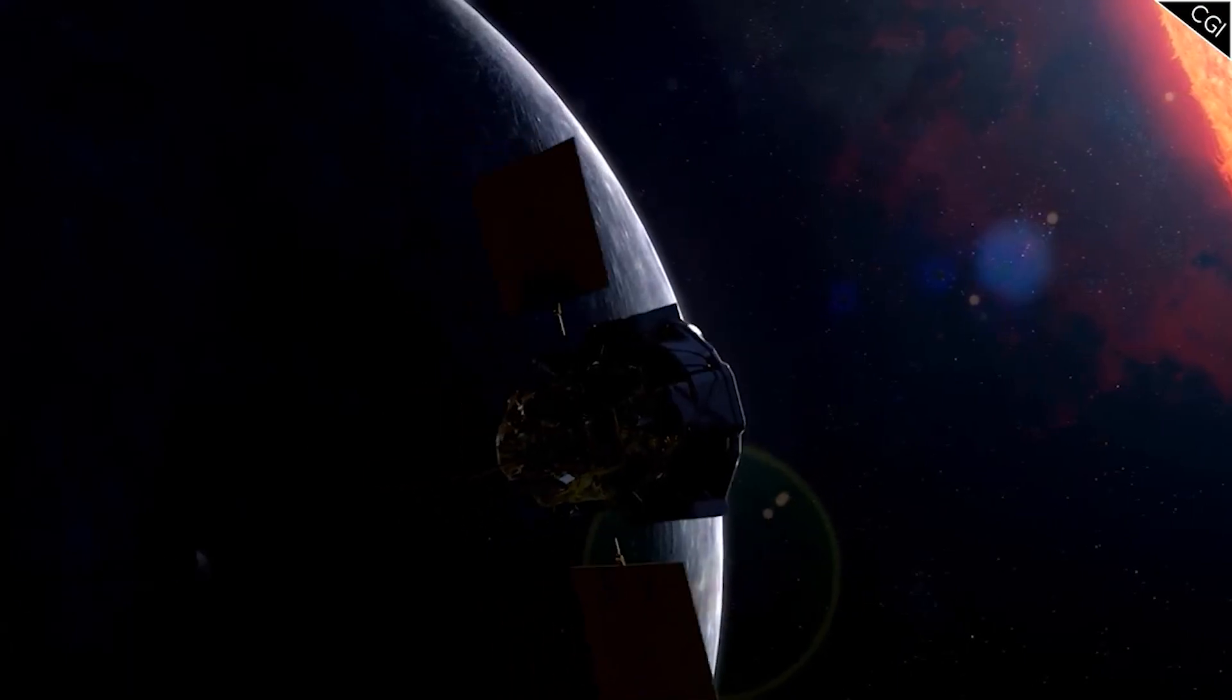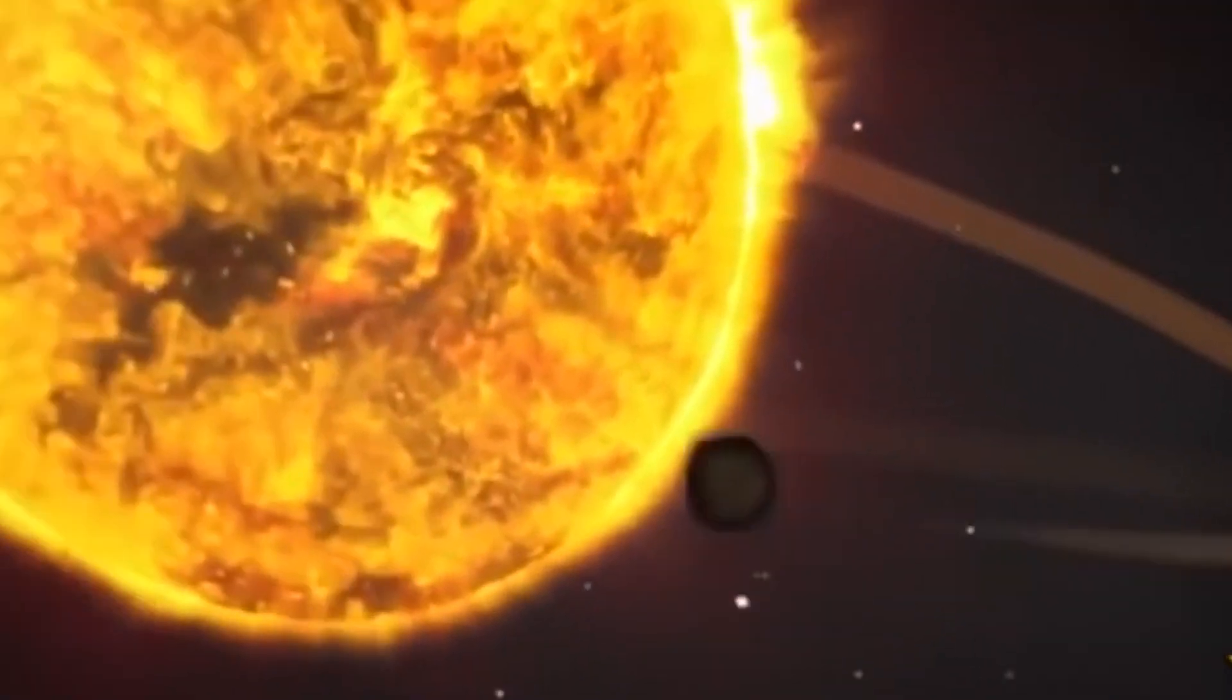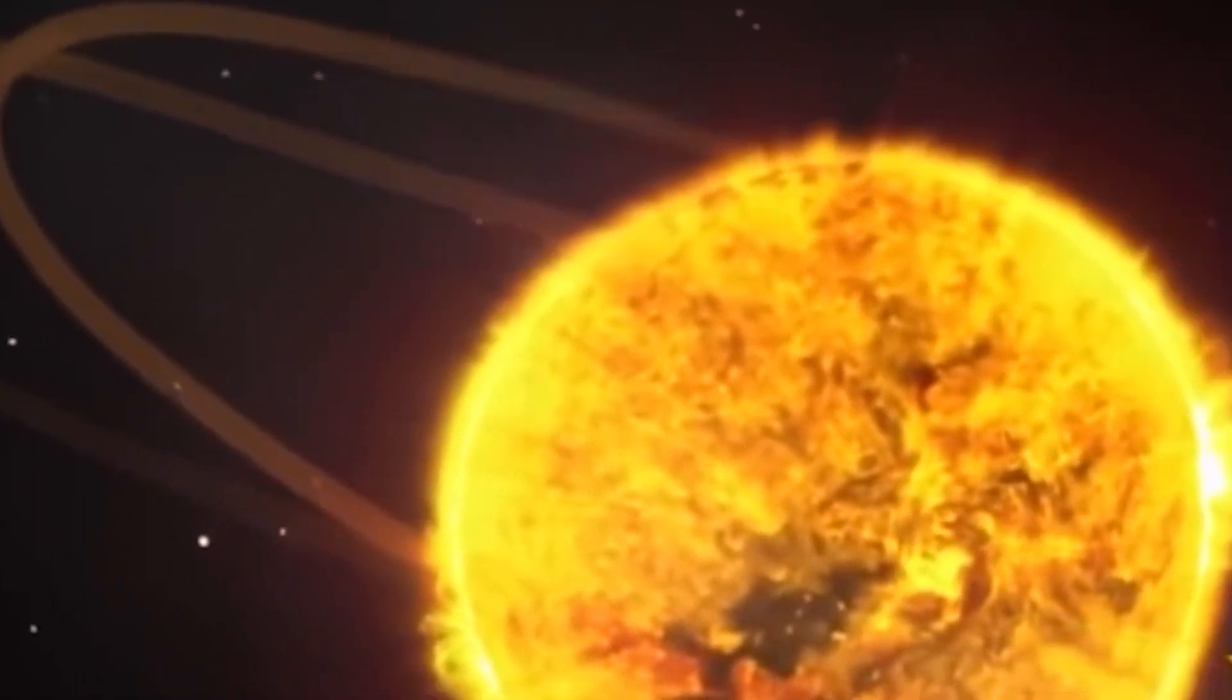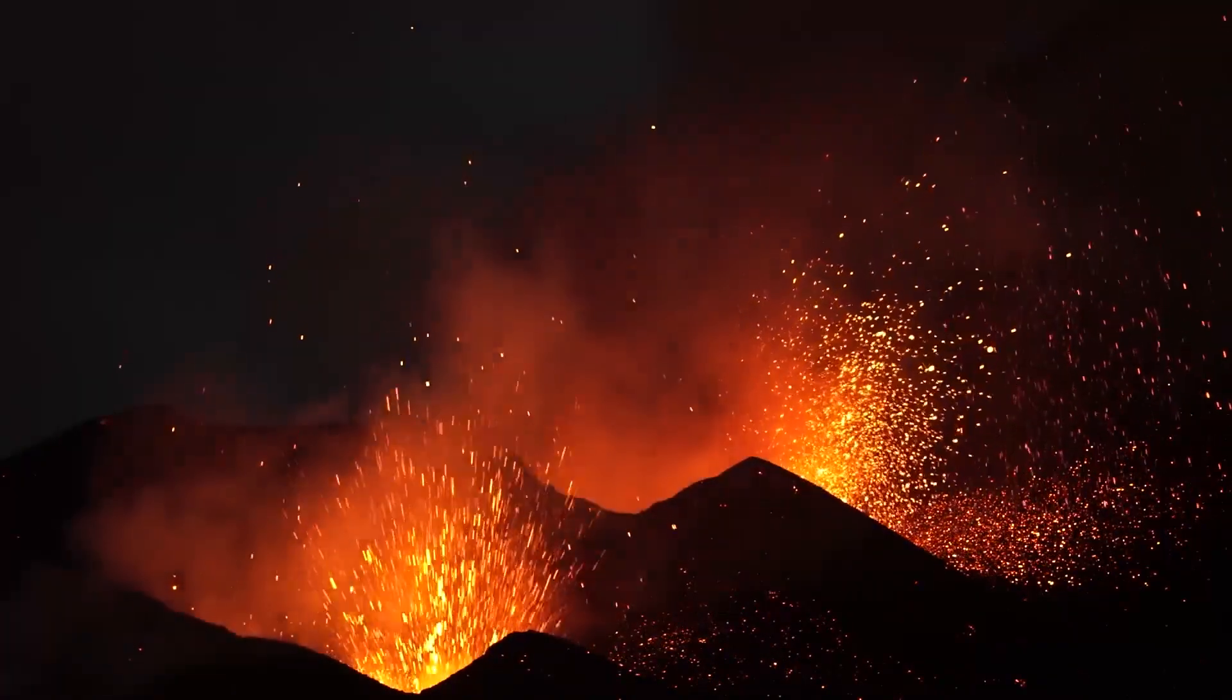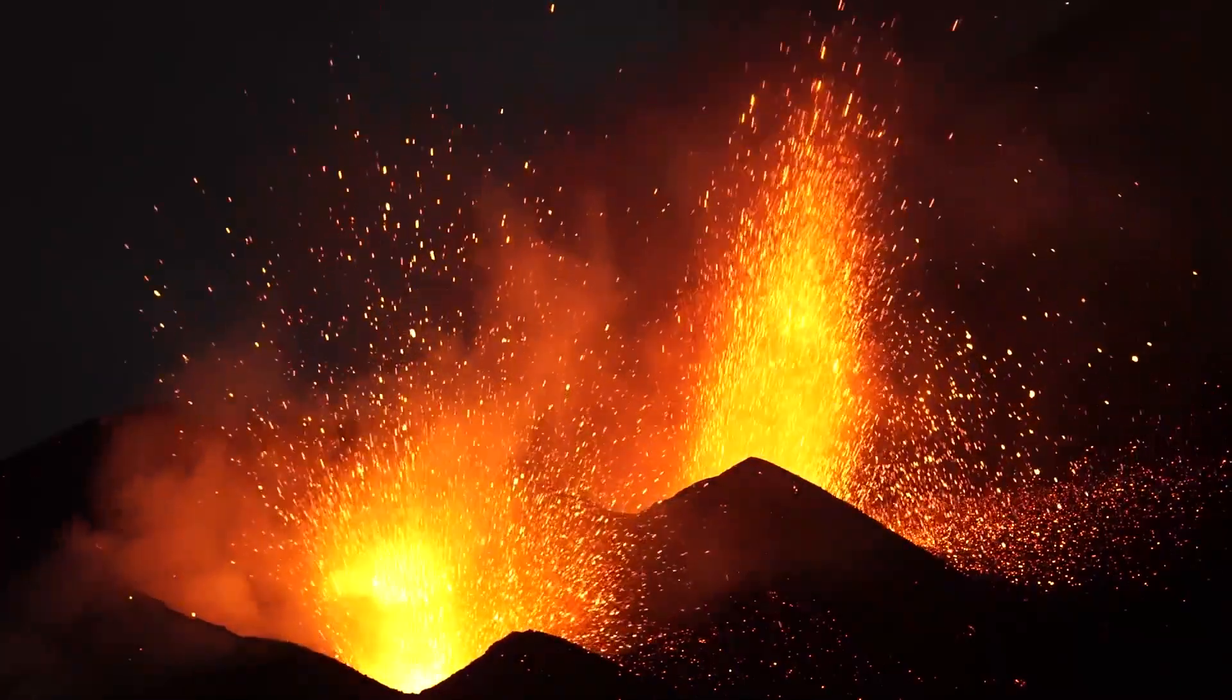It conducted multiple flybys before settling into orbit around Mercury in 2011. Over the course of its mission, Messenger achieved several significant milestones. It mapped Mercury's surface in high detail, revealing a complex history of impacts and volcanic activity.